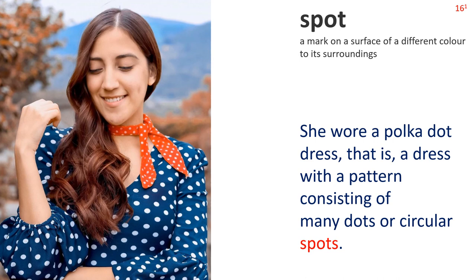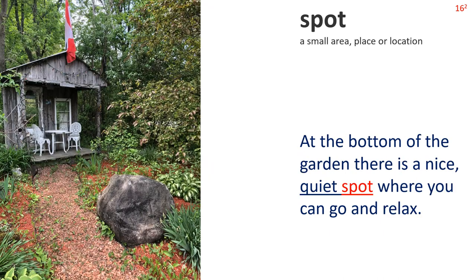Spot — Definition 1: a mark on a surface of a different colour to its surroundings. She wore a polka dot dress — that is, a dress with a pattern consisting of many dots or circular spots. Definition 2: a small area, place or location. At the bottom of the garden there is a nice quiet spot where you can go and relax.